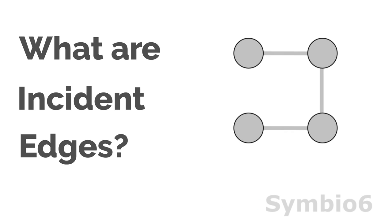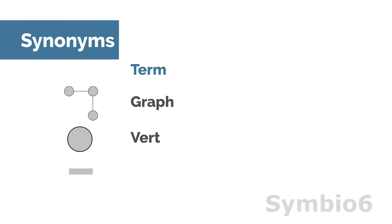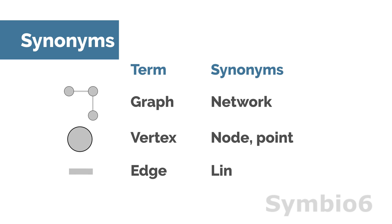What are incident edges? Graph, vertex and edge are terms from graph theory. Common synonyms are network, node and link respectively.